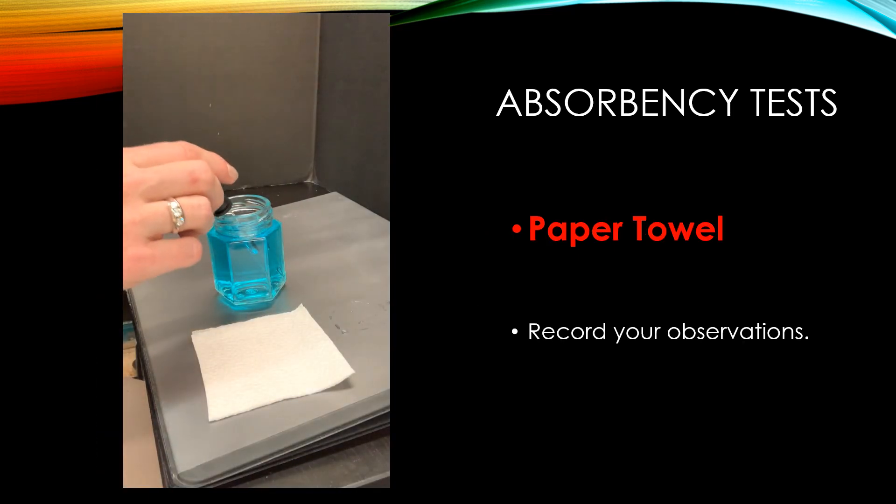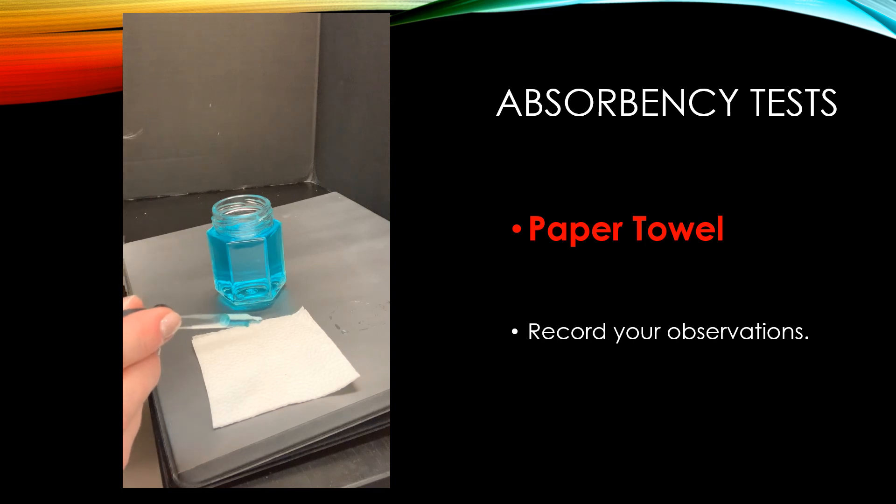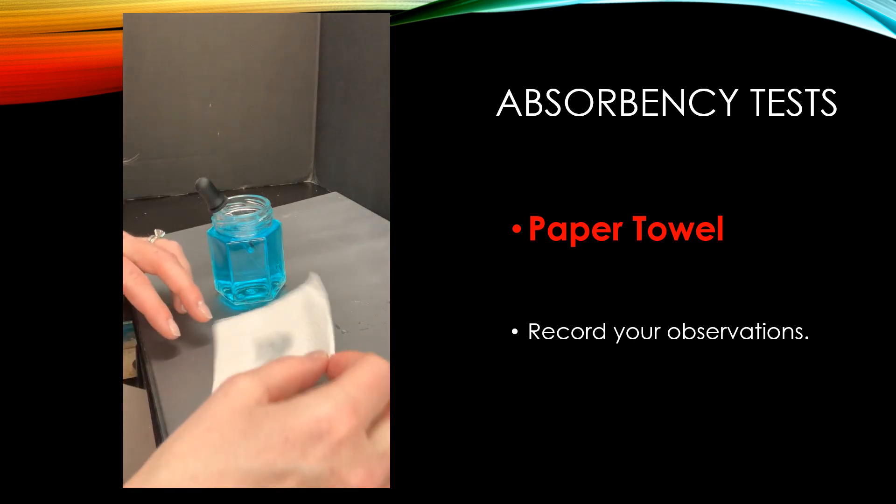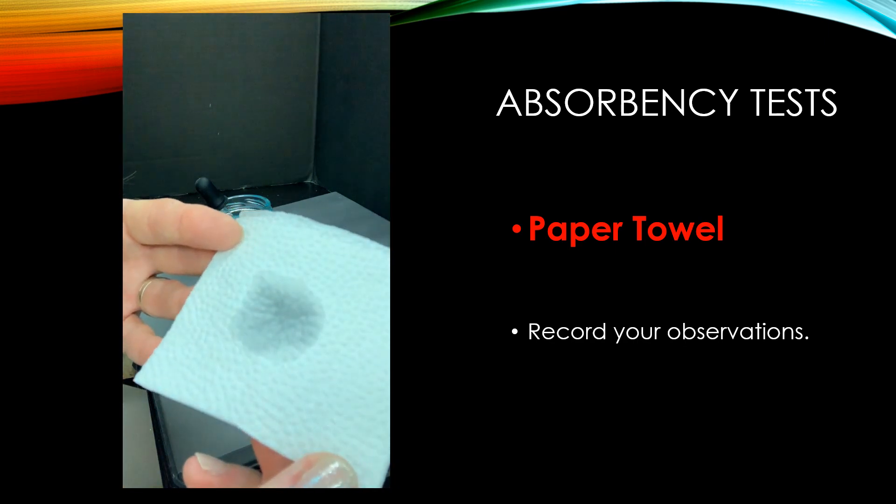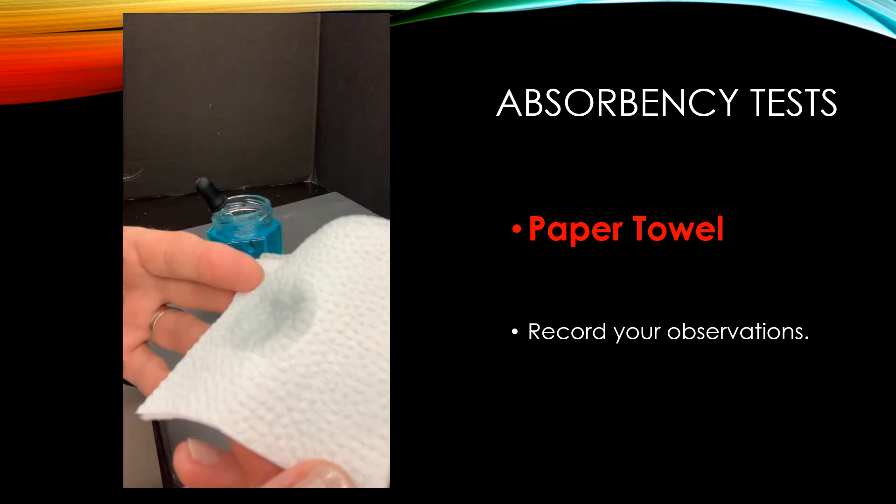The next material to be tested is paper towel. So again, I'm going to take an eye dropper and put three drops of water on the paper towel and see what happens. You can see there's no water sitting on top. The paper towel has completely absorbed the water.